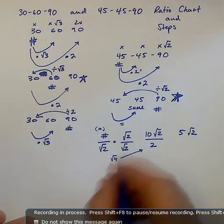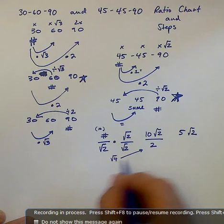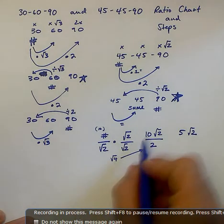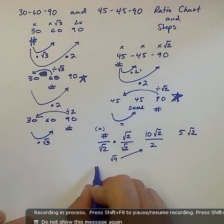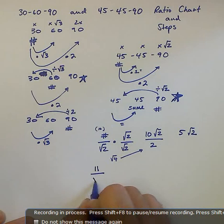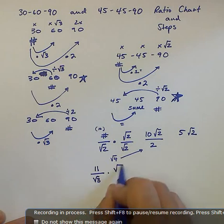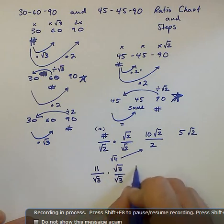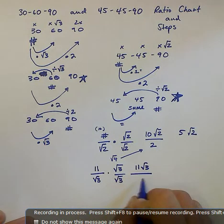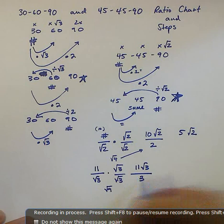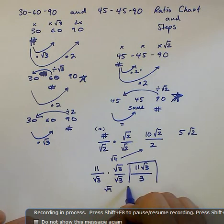So let's say that happens. Let's say you get a number like, and this one I showed you one you could reduce. Let me just give you one maybe where you can't reduce, just so you see what that looks like. Then you get 11 square root of 3 over square root of 3 times square root of 3 is square root of 9, or 3. And then you would just leave it like this here.